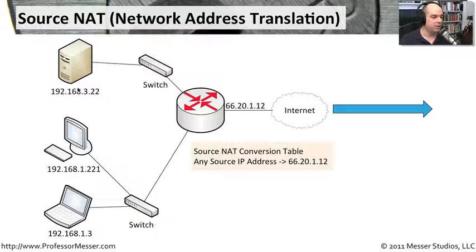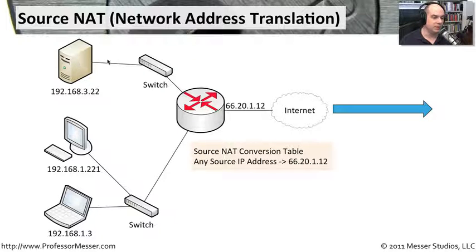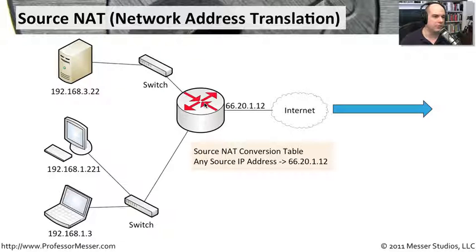When they talk to the internet, they're not going to talk by 192.168.3.22. If you're going to Google or something that's out on the internet side, they'll send the request to Google. But before it leaves your facility, usually a router, or in most cases a firewall, is going to be doing a network address translation. This is a source network address translation because it's changing the source IP address that's being transmitted out to the internet.